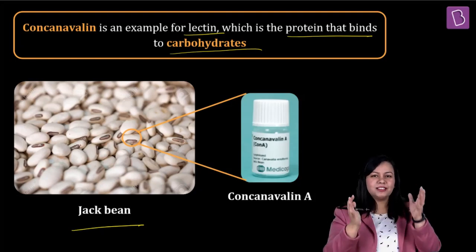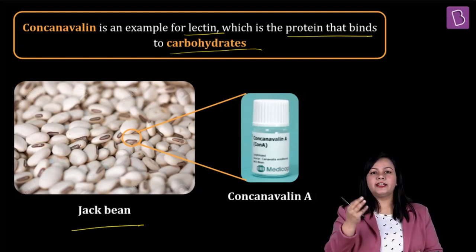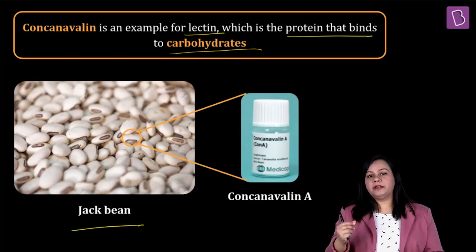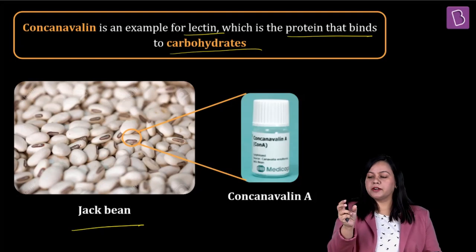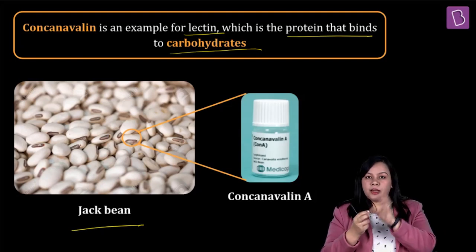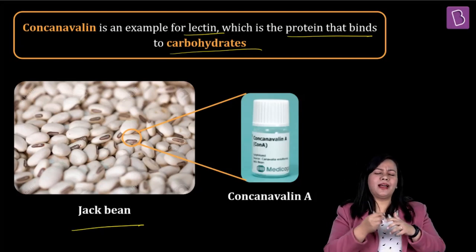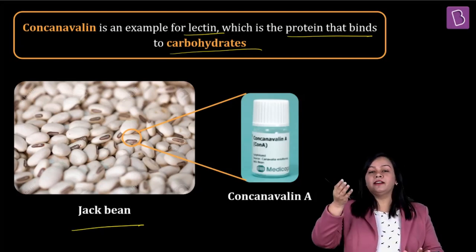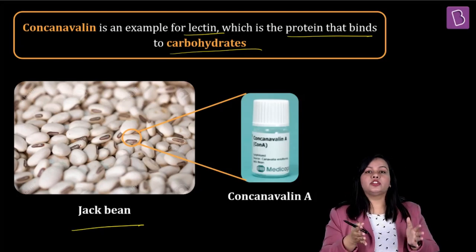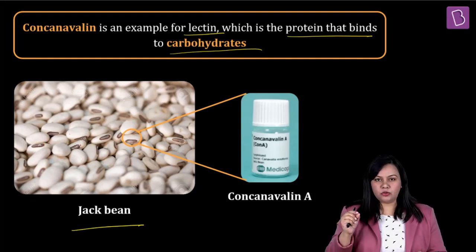What is the significance of lectins? They are used in chromatographic techniques where we are trying to isolate and extract a glycosylated molecule — a macromolecule which has carbohydrate attached to it. Since lectins bind to these carbohydrates, we can literally pull out these glycosylated macromolecules from the system and chromatographically isolate and identify them. So these molecules have significance in identification and extraction of glycosylated macromolecules.